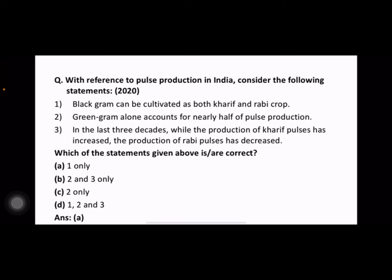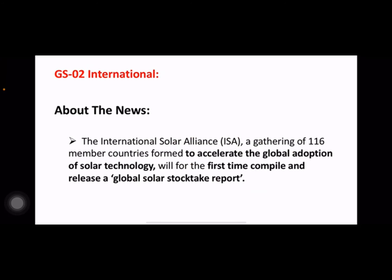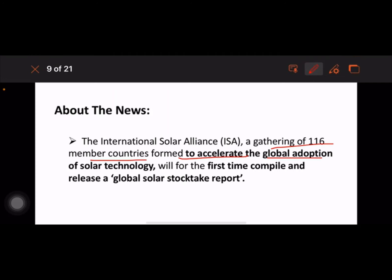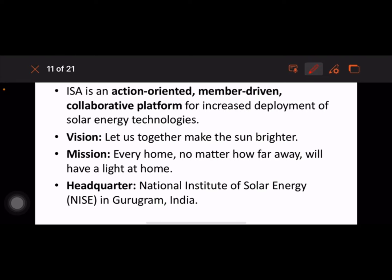ISA — the International Solar Alliance — is set to release a report on the global adoption of solar technology. This comes under GS2 international relations. ISA will for the first time compile and release a global solar stock-take report. ISA is an intergovernmental organization launched in 2015 by the Prime Minister of India and the President of France at the UN Climate Change Conference held in Paris.